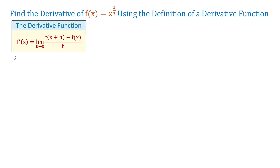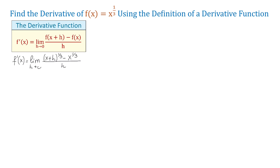So then, for our function, f prime of x equals the limit. In the numerator, first we need f of x plus h, and this means that in this function we have to replace x with x plus h. So we will have x plus h to the one-third minus the function f of x, which is x to the one-third. All this over h, and h approaches 0.